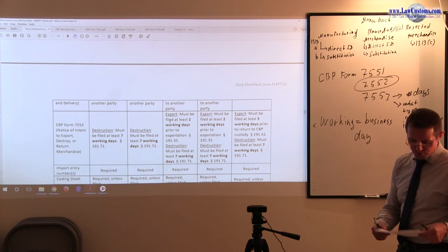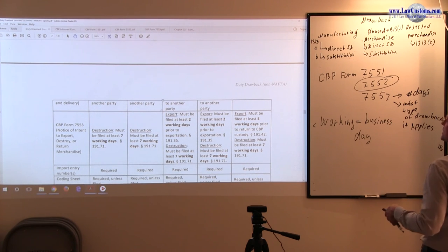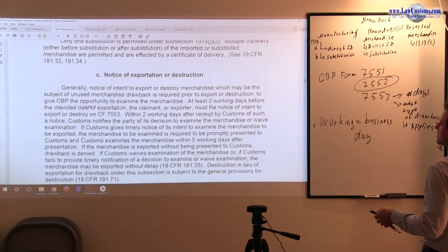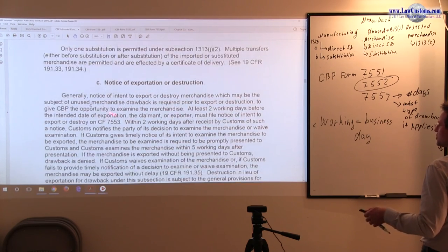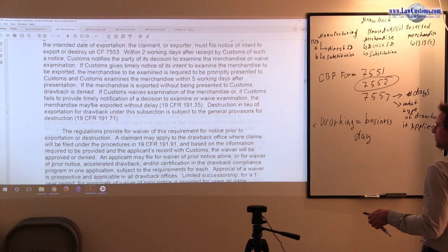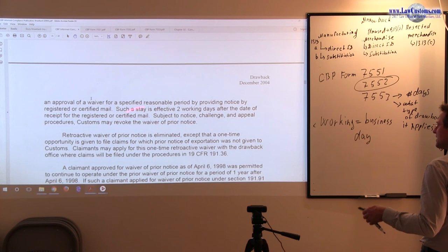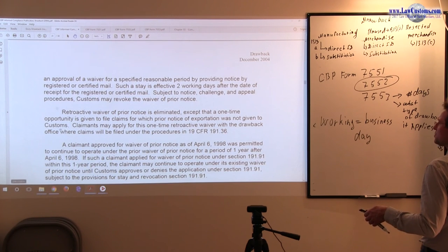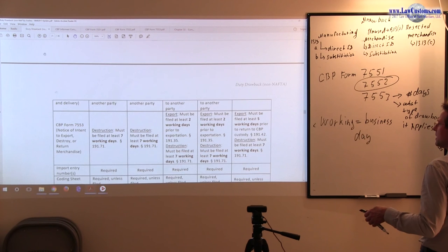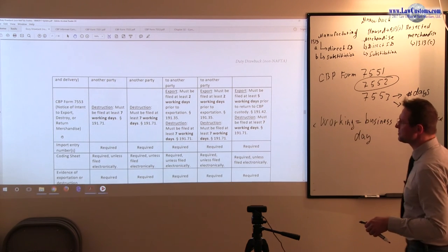Also, I'd like to bring your attention to the waiver discussion and the informed compliance publication. So notice of exportation and destruction, customs goes into this two working day rule, five working day rule, and also the waivers. So basically, that chart represents the snippet of whatever is here. So that's CBP Form 7553.